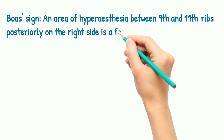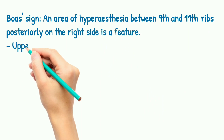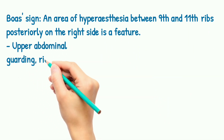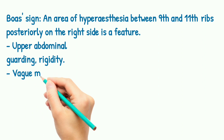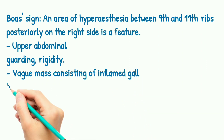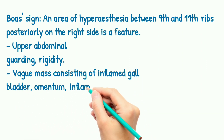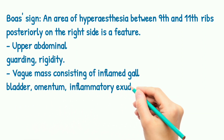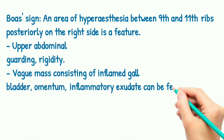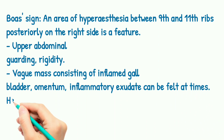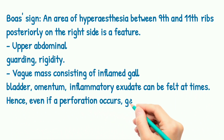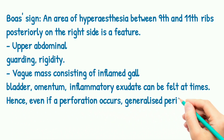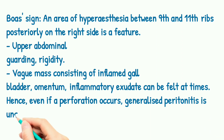There is upper abdominal guarding and rigidity. A mass consisting of the inflamed gallbladder, omentum, and inflammatory exudate can be felt at times. Hence, even if perforation occurs, generalized peritonitis is uncommon.